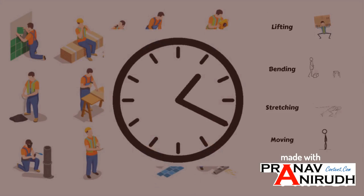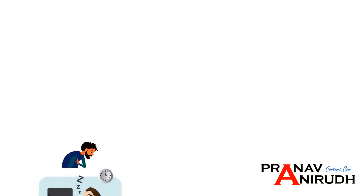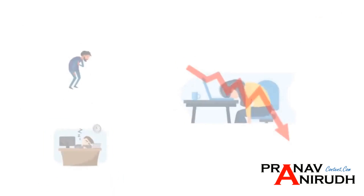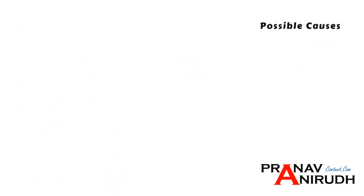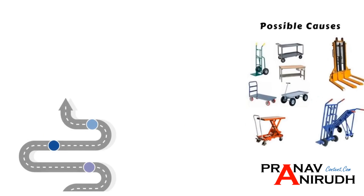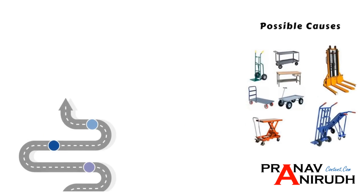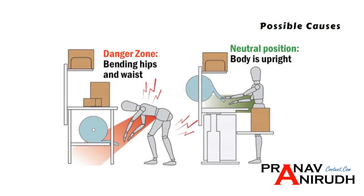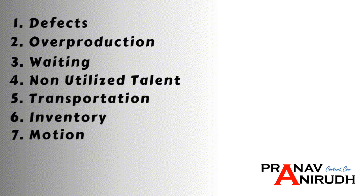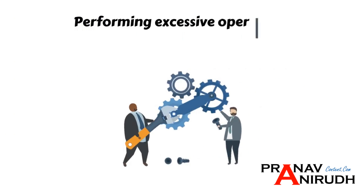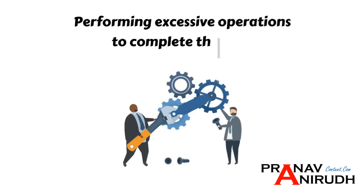Another type of waste is Motion. Workers making unnecessary movements like lifting, bending, stretching, and moving consume more time, which results in fatigue and low productivity. Possible causes include zigzag process layout and non-availability of proper tools, and workstations not designed ergonomically.